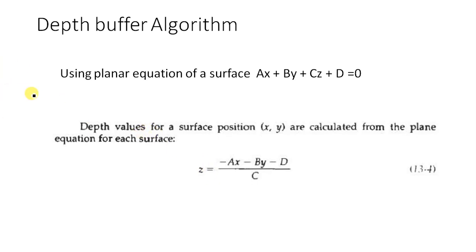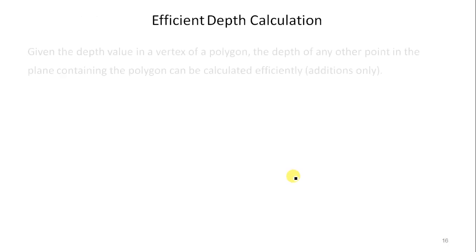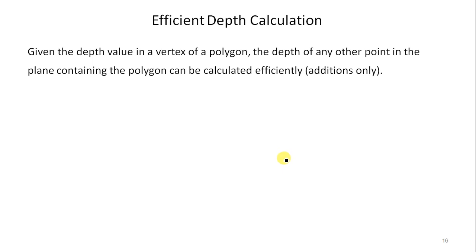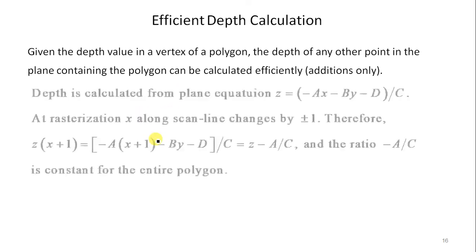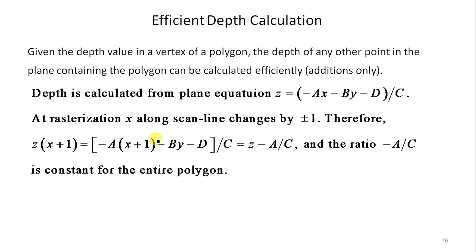To find the depth, we use the planar equation of a surface: Ax + By + Cz + D = 0. Solving for Z gives: Z = (−Ax − By − D) / C. For efficient depth calculation, given the depth value at a vertex of a polygon, the depth of any other point in the plane containing the polygon can be calculated using this formula.